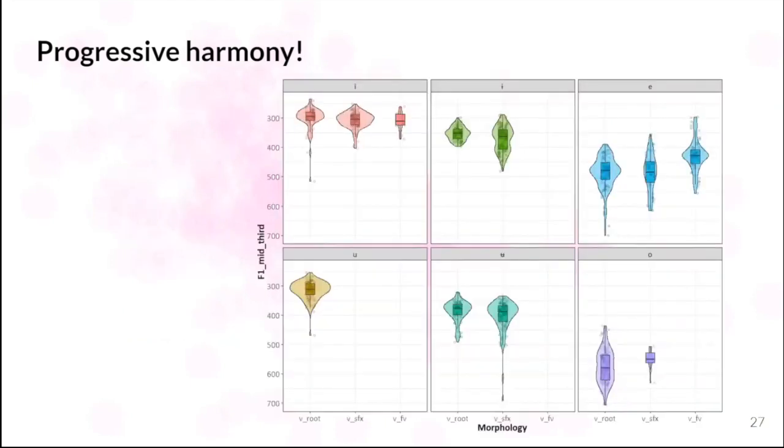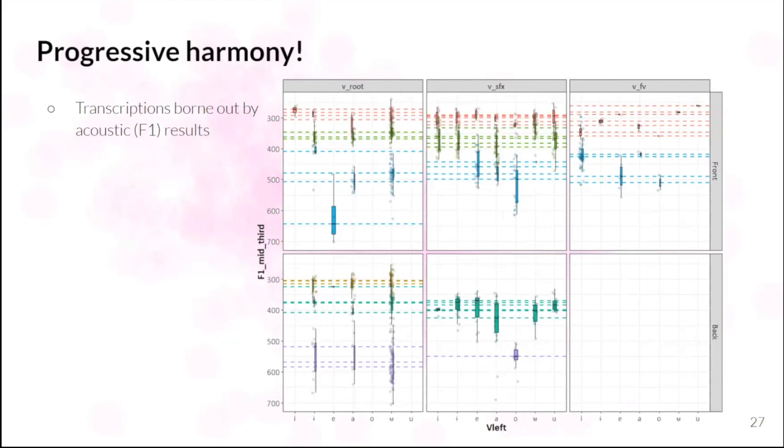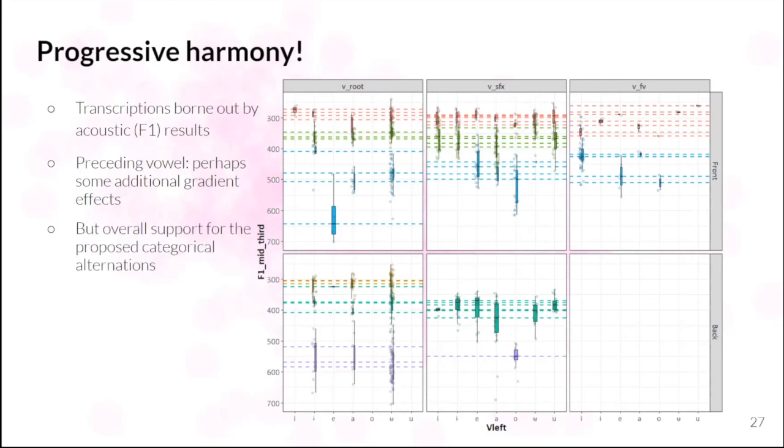And this plot here is showing the comparison of vowels in verb roots versus these suffixes and then final vowels in particular. And there is, basically, there is agreement, more or less, between how I've coded these and then the F1 measurements that I took for these. But then breaking open these categories and looking at potential effects of preceding vowel, there are perhaps some additional gradient effects. But yeah, there is overall support for these proposed categorical alternations, and no further categorical alternations.